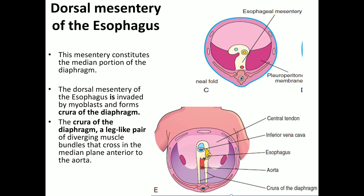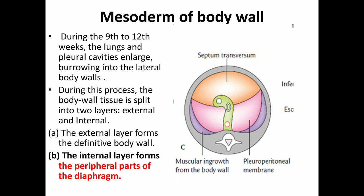The third component is the dorsal mesentery of the esophagus, which forms the median part of the diaphragm. The right and left crura of the diaphragm are formed by this dorsal mesentery of the esophagus — you can see the esophagus (yellow structure) with the dorsal mesentery posterior to it forming the crura. To summarize: the central tendon is formed by the septum transversum; the crura by the dorsal mesentery of the esophagus; the small peripheral part by the pleuroperitoneal membrane; and the large peripheral part by the mesoderm of the body wall.